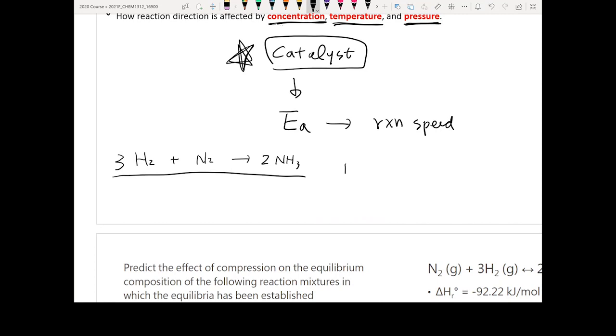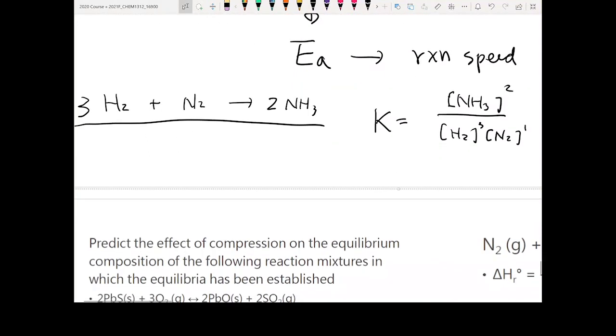So we know that K is going to equal to NH3 squared over H2 to the cube times N2 to the first power. So now think about this, if I increase the concentration of H2. If I increase the concentration of H2, will the reaction move to the reactant side or product side?